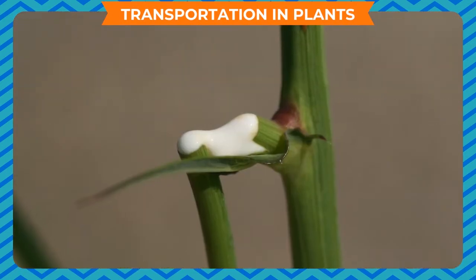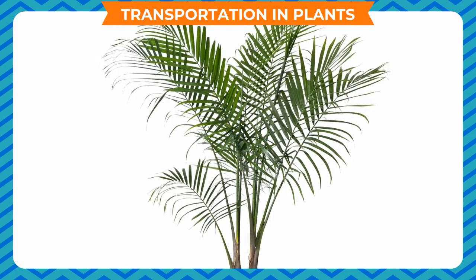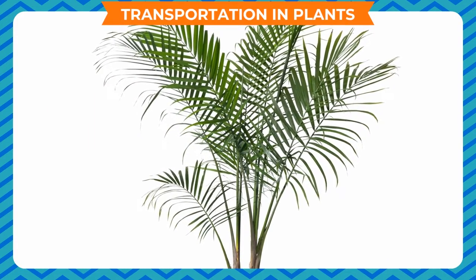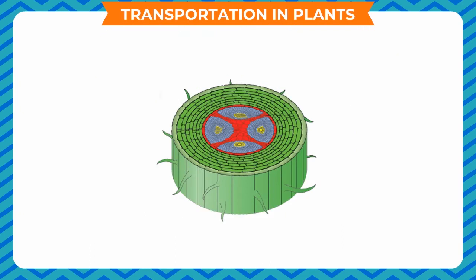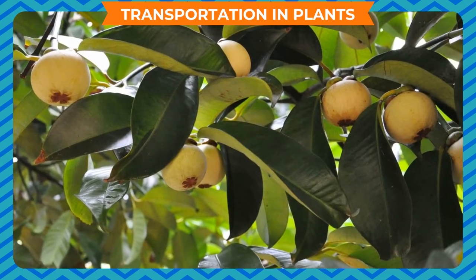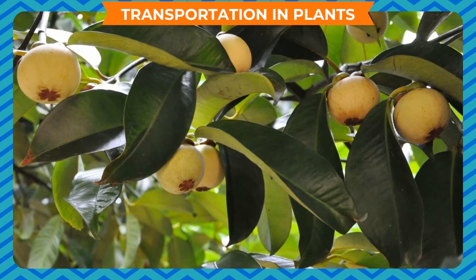Plants contain a whitish fluid called sap for the purpose of transportation of substances inside the plant body. Plants have a set of tissues called xylem and phloem, which are responsible for the transportation of raw materials and food respectively.